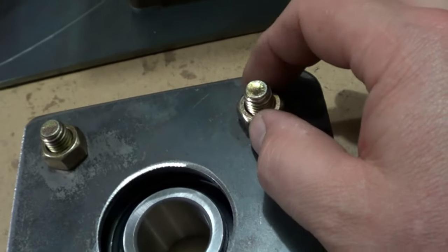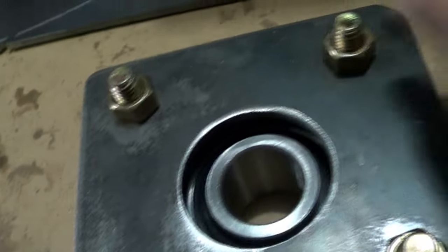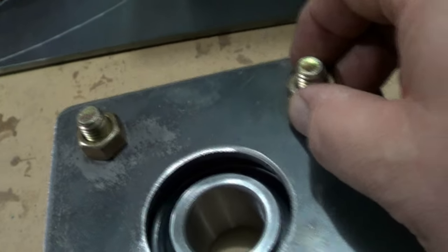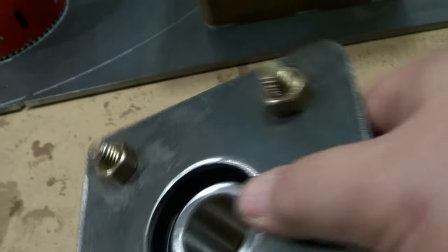And then what I'm going to do - of course I'm not going to have this bearing in here when I do this - but I'm going to be tacking on these nuts, welding them, and that way they're a permanent fix to the plate. Then I can replace the bearing just by removing the bolts.